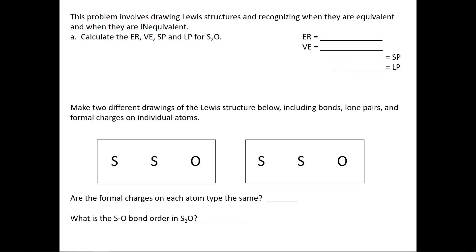In this problem we want to look at Lewis structures and recognize when they are drawn as equivalent structures and when they are non-equivalent structures. The problem with drawing Lewis structures is that the electrons are traveling in their orbitals and we're trying to represent in a static way what has movement.